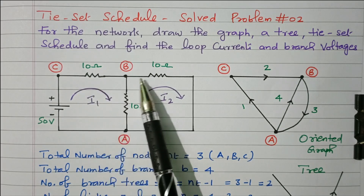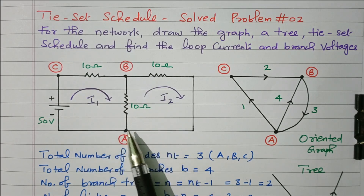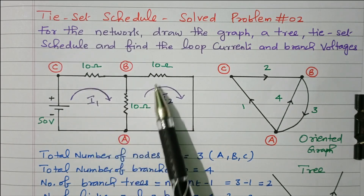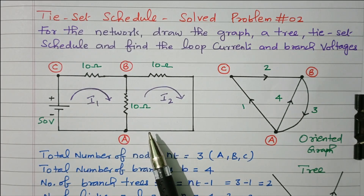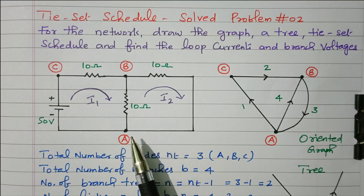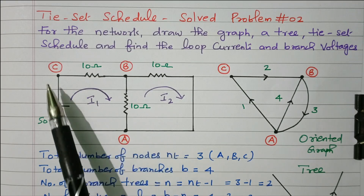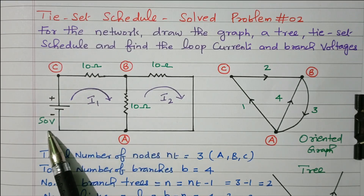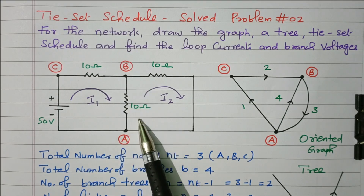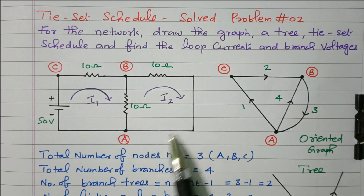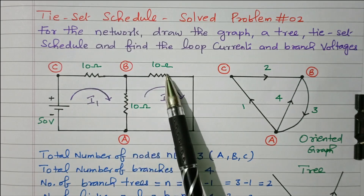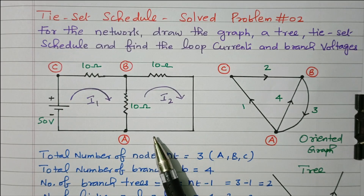We need to find the branch voltages — that is, the voltage across each and every element. A branch is nothing but an element connected between nodes. For example, between A and C a 50V source is connected, between A and B a 10 ohm resistor is connected, between B and C a 10 ohm is connected, and between B and A one more 10 ohm is connected.